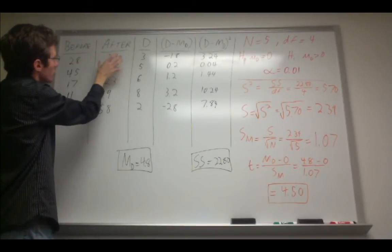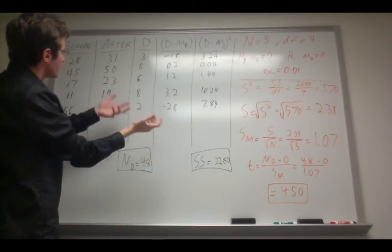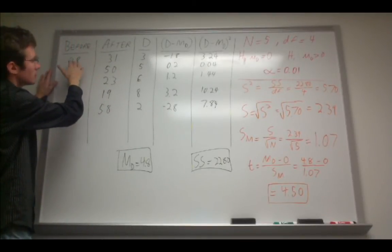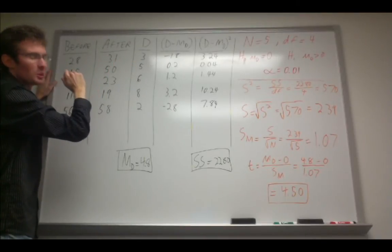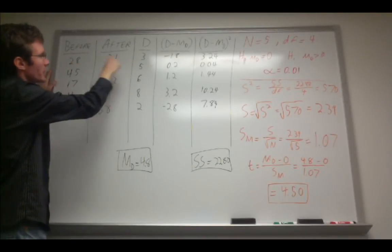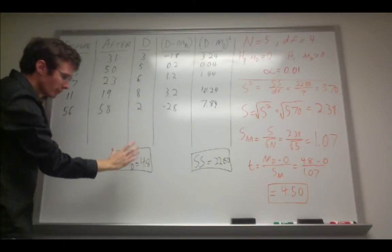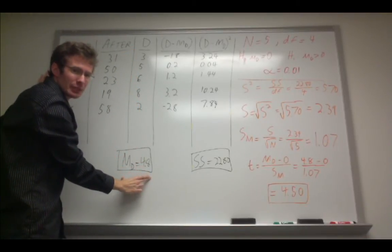So subtract the score before from the after value, and in this case for subject one we get thirty-one minus twenty-eight is three. We do that for all five subjects and then we take the mean difference.